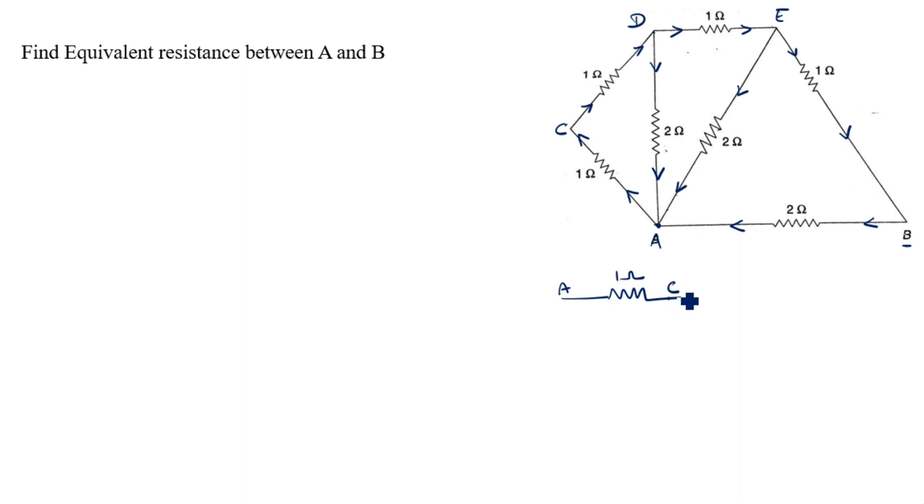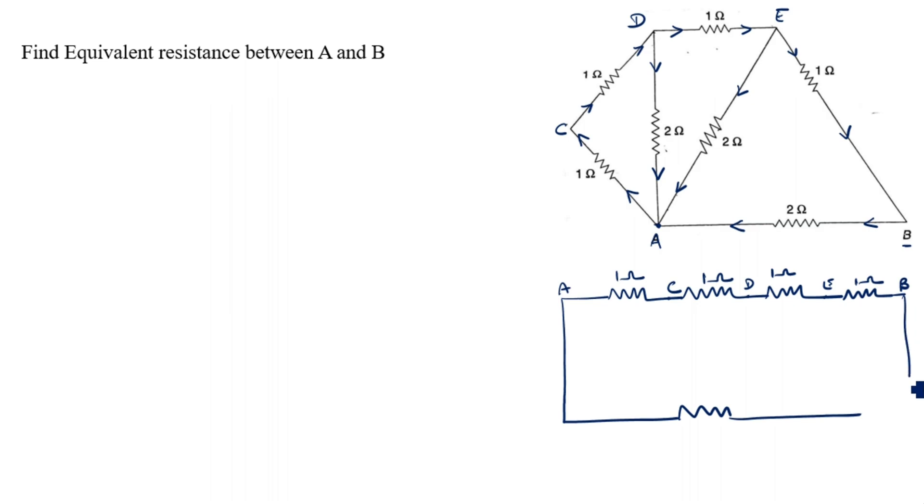Starting from A, we draw the first resistor of 1 ohm, reaching node C. After that it continues to D with 1 ohm, then to E with another 1 ohm, and finally down to B. A to B directly is 2 ohm.